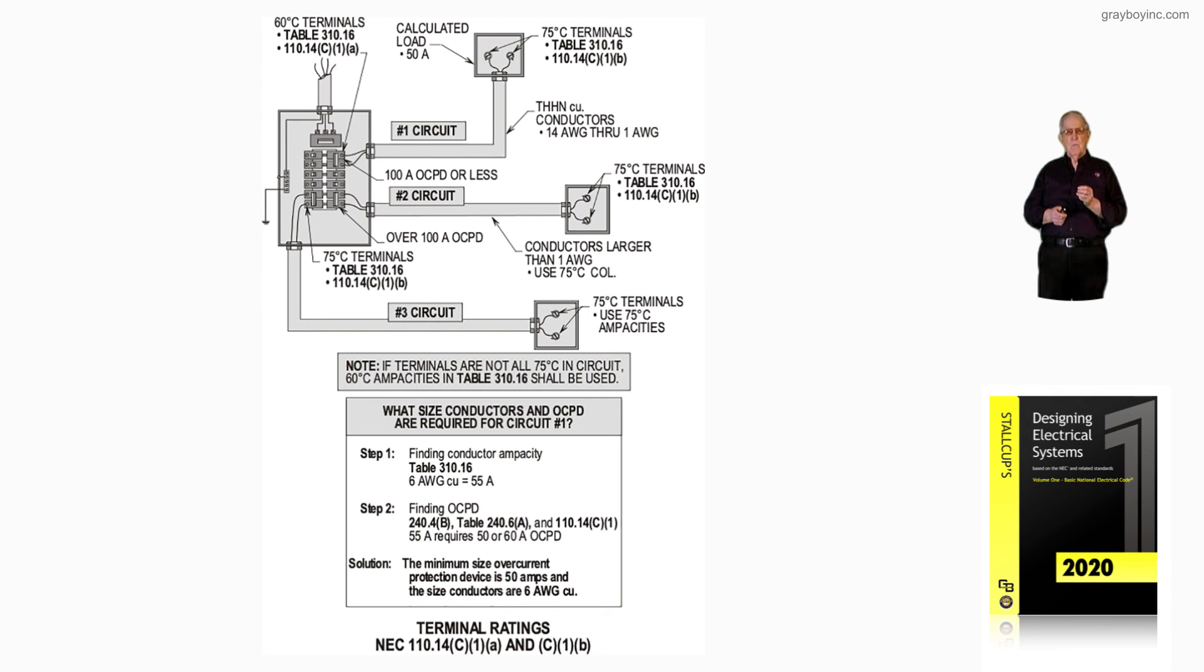Once again, I will point out this is a rule of thumb method that we used when I worked for a firm. And notice this deals with the long and the short-time current rating of conductors in compliance with 310.14A3 as well as table 310.16, and the circular mill rating is obtained from table 8 to chapter 9 in the NEC.